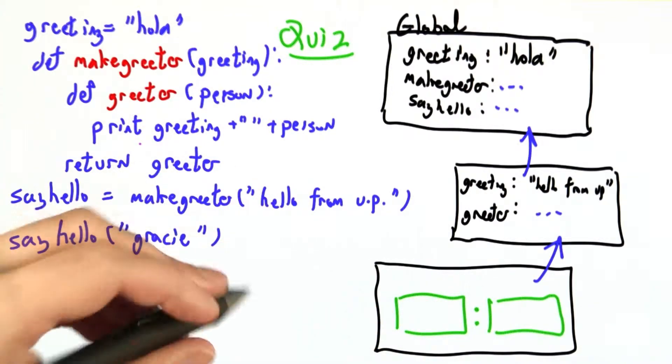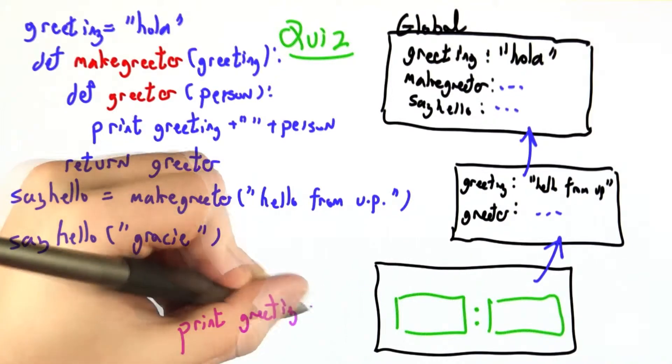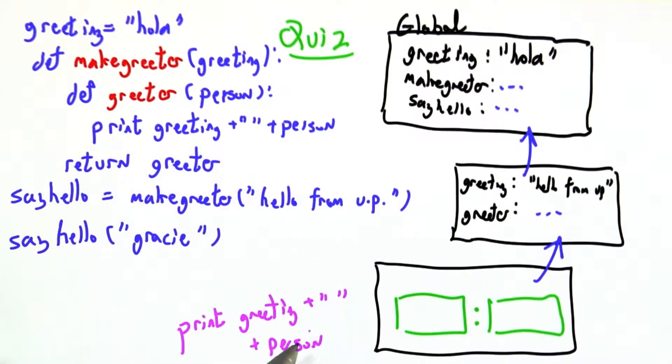So the body of sayHello is print greeting plus person. And we already know from seeing it in the interpreter what it's going to print out. It's going to print out hello from up Gracie.